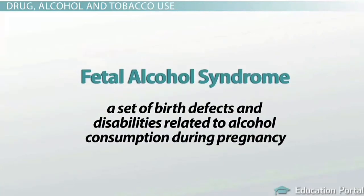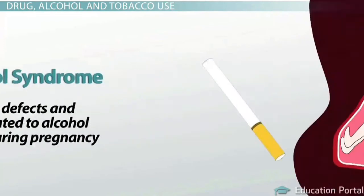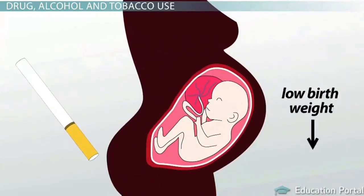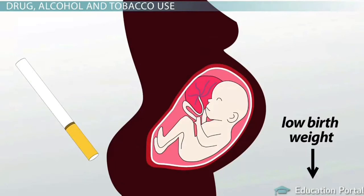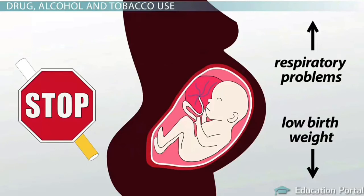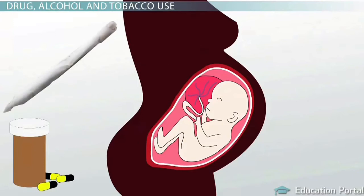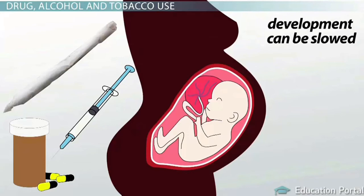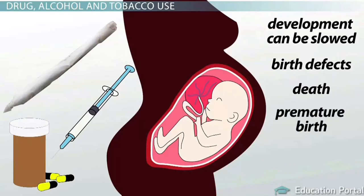Tobacco use during pregnancy can cause low birth weight and has been linked to higher rates of respiratory problems in children. Women who smoke are advised to stop if they discover they are pregnant or trying to become pregnant. The use of illegal drugs can cause a variety of concerns for the health of an unborn child — prenatal development can be slowed, birth defects or death of the unborn child can occur, and there is a higher risk for premature birth.